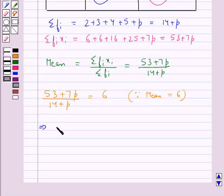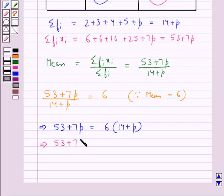So this gives us 53 plus 7p is equal to 6 multiplied by 14 plus p. That is 53 plus 7p is equal to 84 plus 6p.